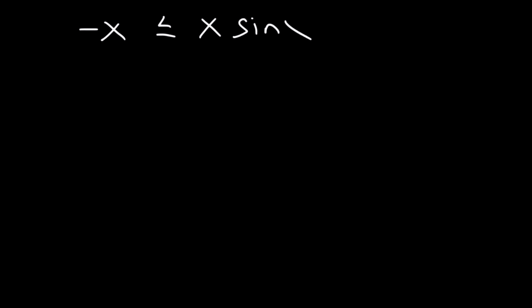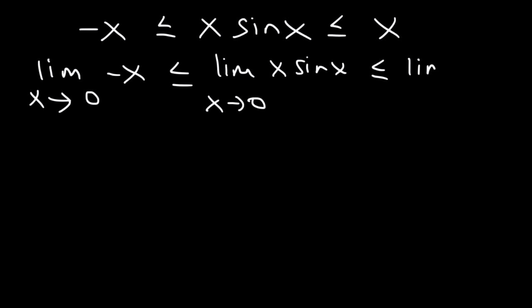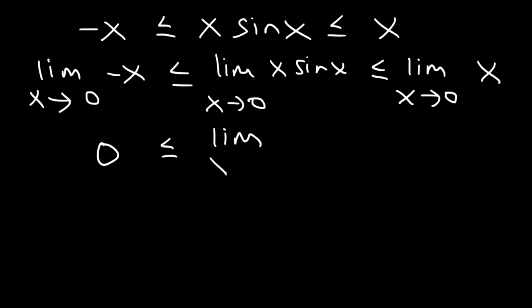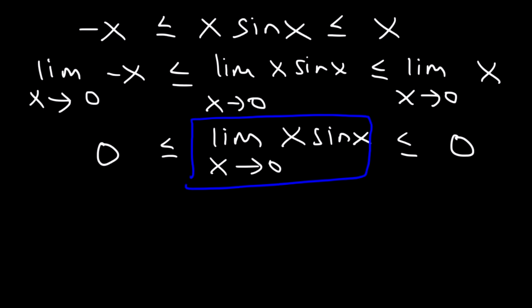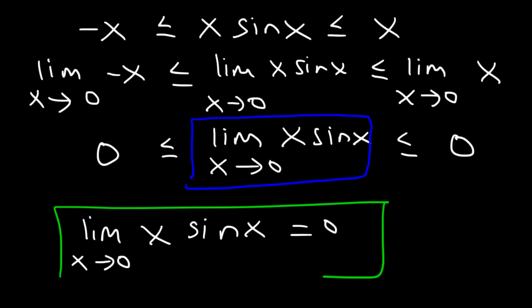We can also write this by taking the limit of each portion of the inequality simultaneously. The limit as x approaches 0 of negative x is 0 on the left, and the limit as x approaches 0 of x is 0 on the right. According to the squeeze theorem, the only way all three parts of the inequality can be true is if they're all equal to 0. So the limit as x approaches 0 of x·sin(x) equals 0.